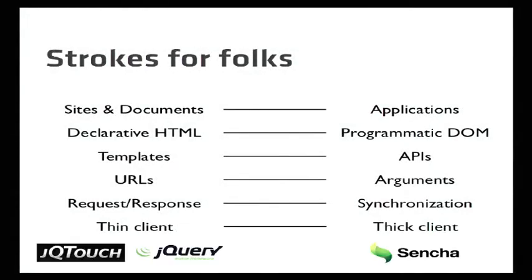There are really two dialects of these frameworks. There's the progressive enhancement document-focused approach — that's JQTouch and the jQuery Mobile approach — which is: start with an HTML5 document, mark it up with some JavaScript and CSS until it looks like an application. And then there's the programmatic thick-client approach with Sencha Touch, where you create everything from JavaScript and manage a JavaScript event model.